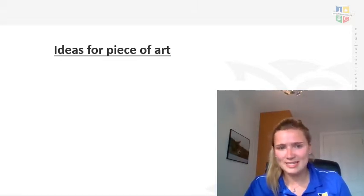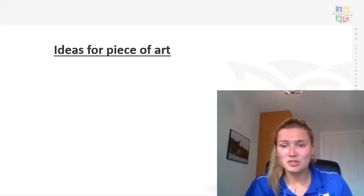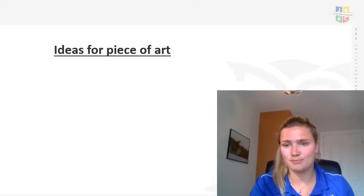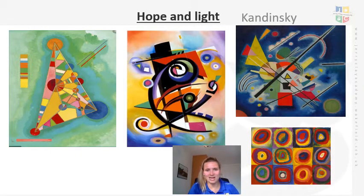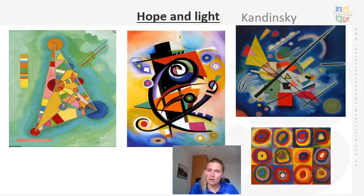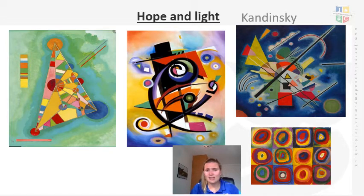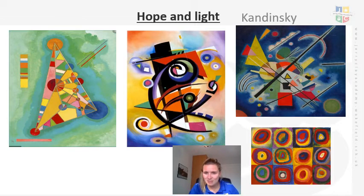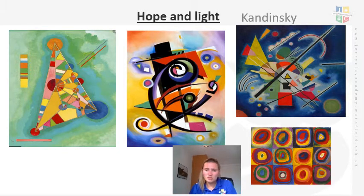We're going to talk through some ideas of pieces of art that you might want to do, because you're then going to use these ideas to do your mood board. As we go through the different artists, I want you to look at the pictures and think: what can you see? How do the colours make you feel? How do the patterns make you feel? What do you feel when you look at these pictures — happy, sad, curious? This is Kandinsky's artwork here, using a lot of shapes and a lot of colours. Pause the video now and have a think about how you feel and what you can see in the pictures.